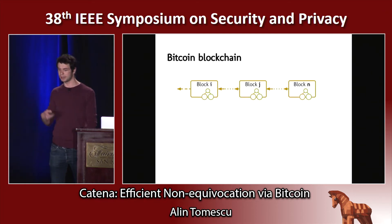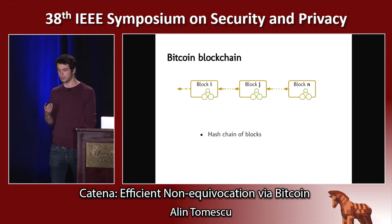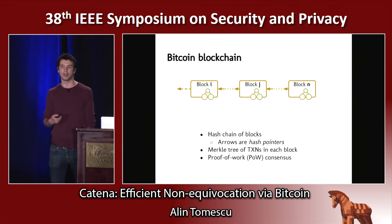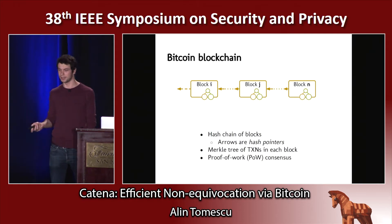This thing comes up a lot these days: what is this blockchain? It's just a hash chain of blocks. Block n contains a hash of block n-1, so each block has a hash pointer to the previous block, and the arrows indicate hash pointers. Each block has a Merkle tree of transactions. Everybody agrees on this hash chain of blocks via proof-of-work consensus, which we do assume works.